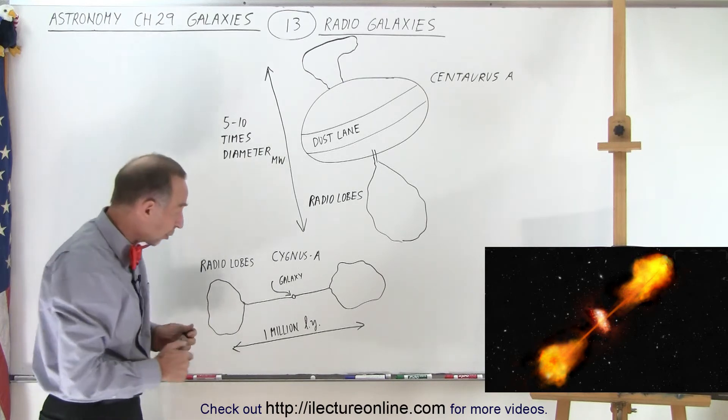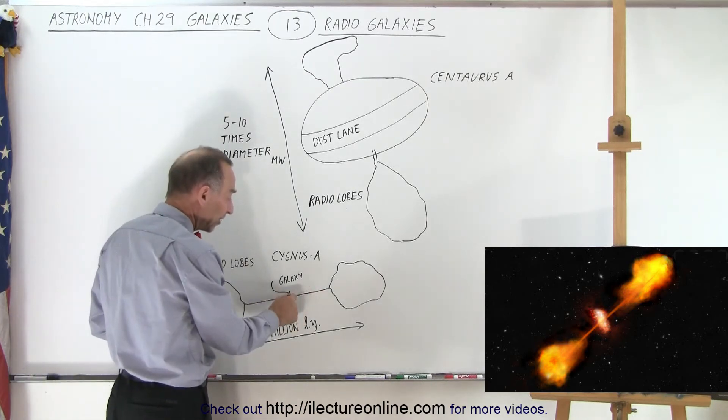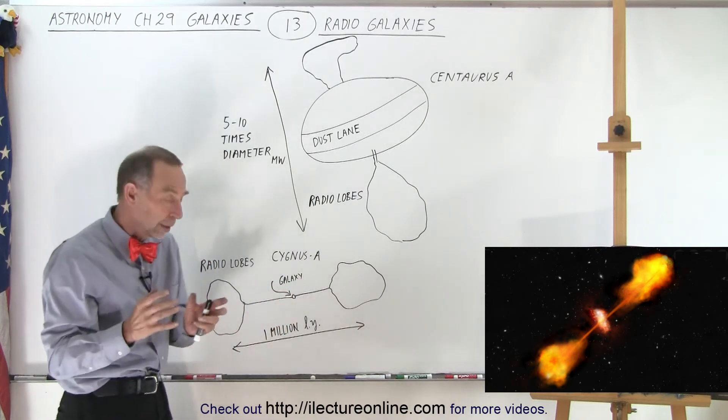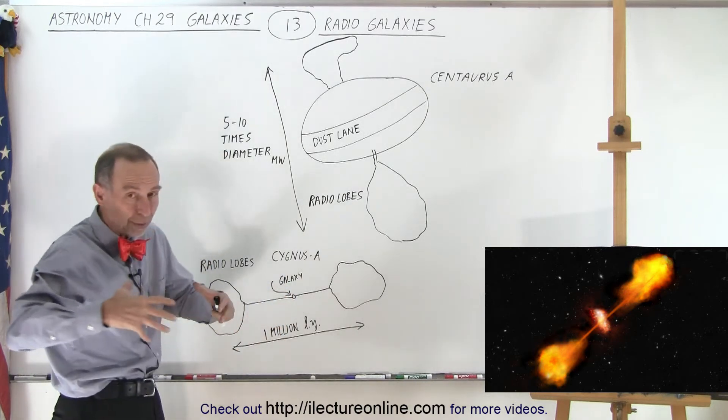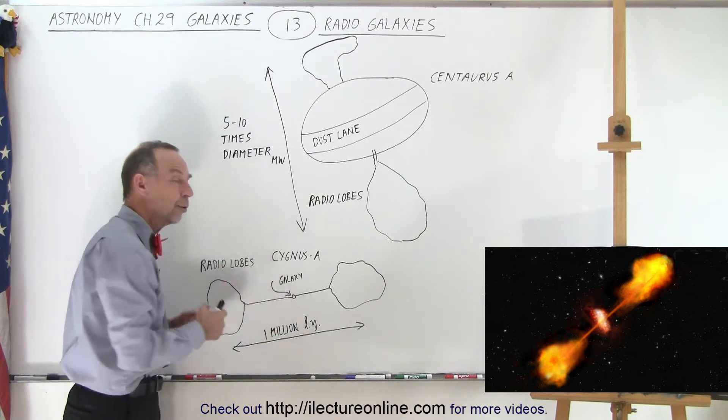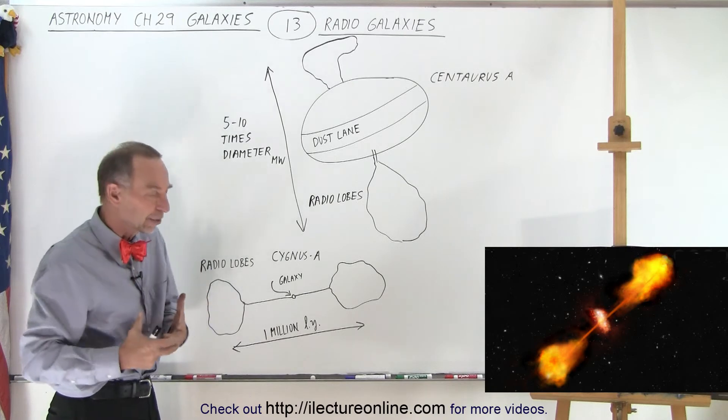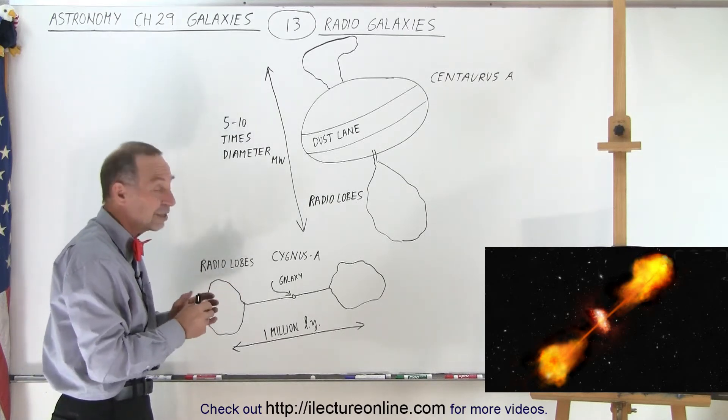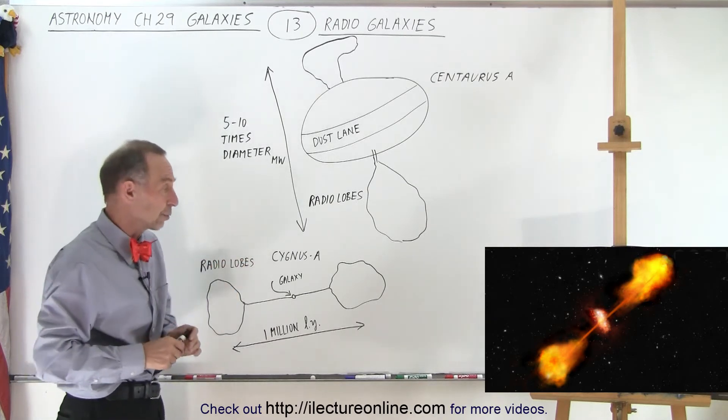What we also find sometimes is not only is that happening, we also get very energetic energy coming from the very center of that galaxy. That's where the big supermassive black hole is. Sometimes we also get strong radio radiation from the activity that's going on right inside that central region that's typically only a few light years across.